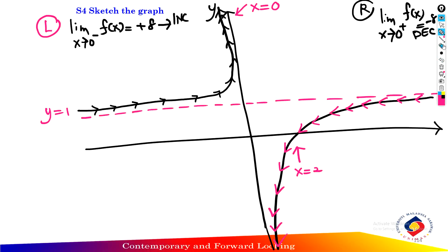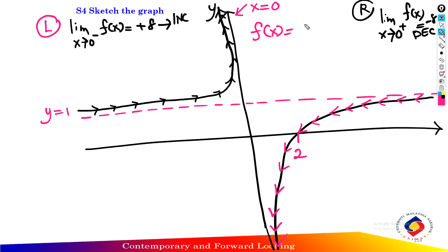Label the x-intercept of the function at x equals 2, and label the graph f(x) equals x minus 2 over x. The y-intercept does not exist.